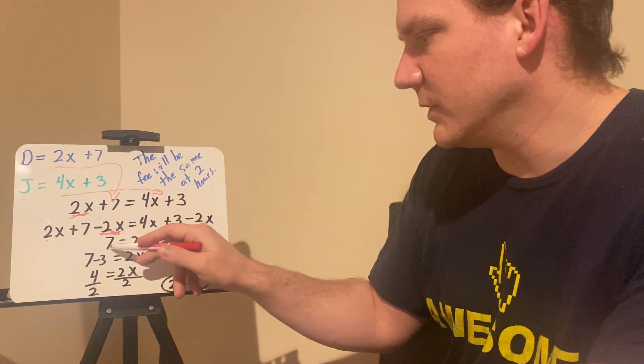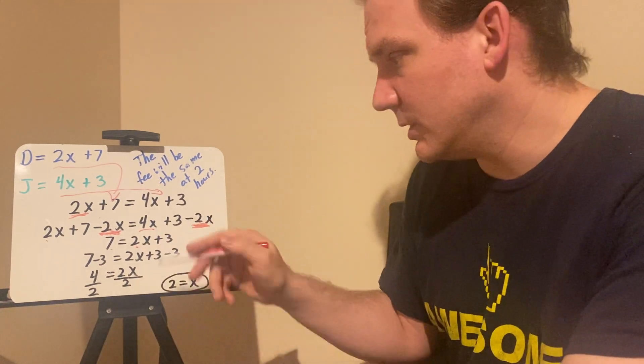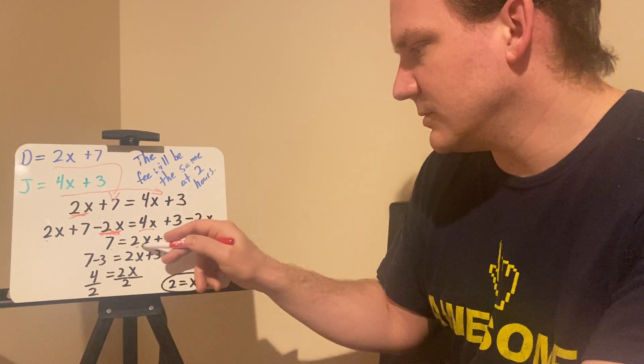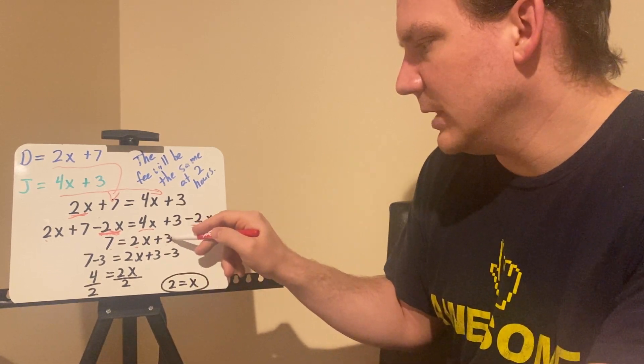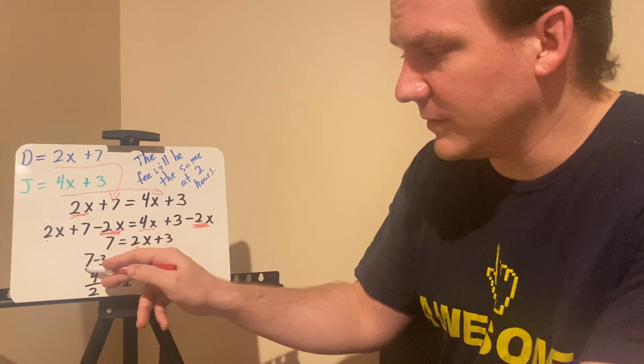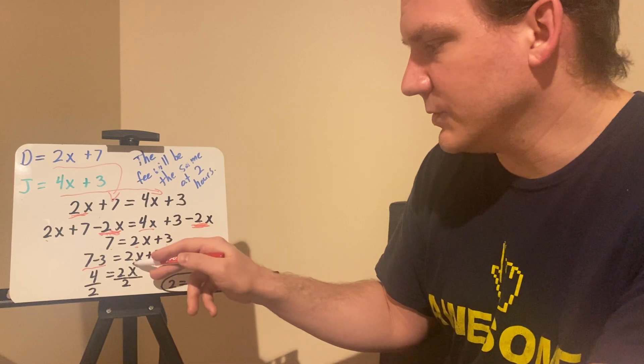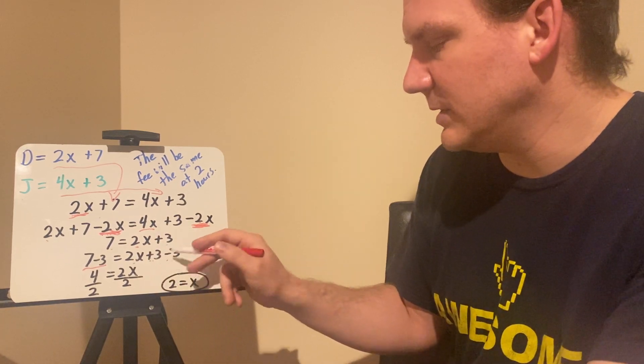So I'm left with seven over here. 4x minus 2x equals 2x. Four minus two is two. So I have 2x in the 3 stays, so 2x plus 3. Now I want to get rid of the 3, so I'm going to do 2x plus 3 minus 3. But to maintain equality, I have to do that over here. So 7 minus 3 equals 2x plus 3 minus 3. Plus 3 minus 3 is going to cancel out to be zero.